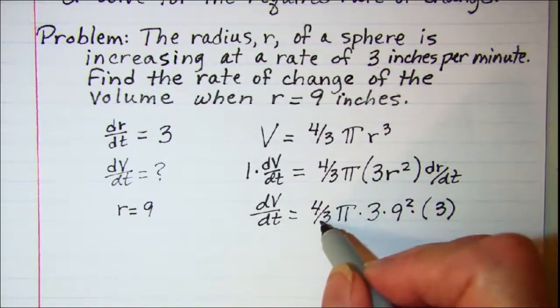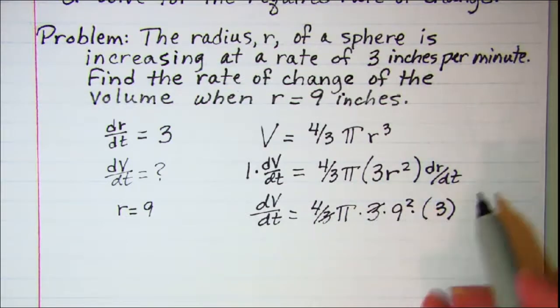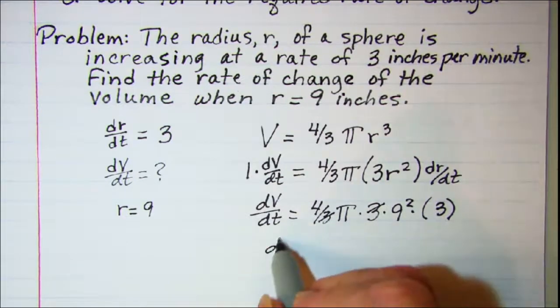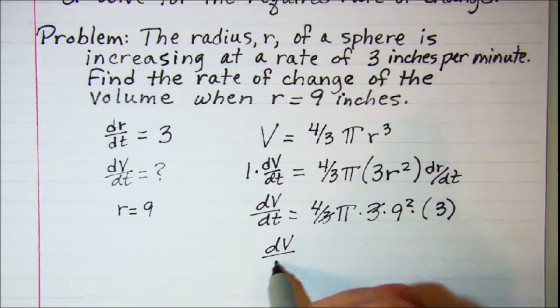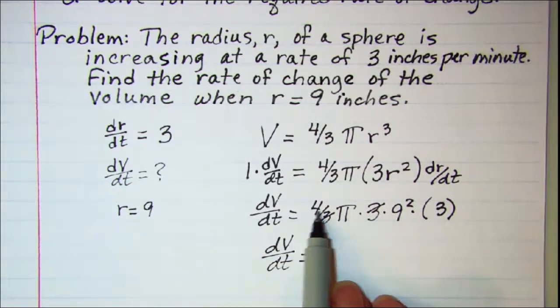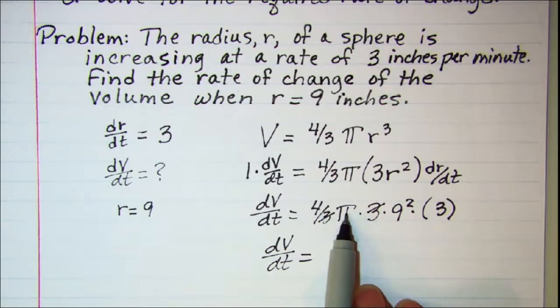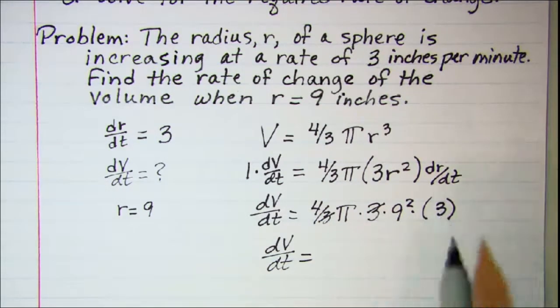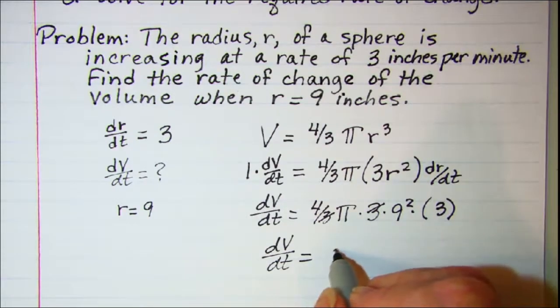I'm going to cancel this 3 with this 3. And I have dV/dt is equal to 4 times π times 81 times 3, so that gives me 972π.